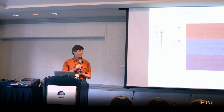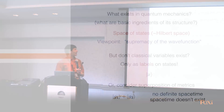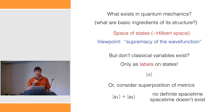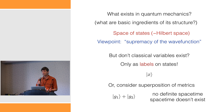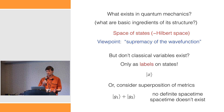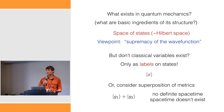Let's start with what exists in quantum mechanics. What are the basic ingredients of the structure of quantum mechanics? Well, certainly a space of states, something like a Hilbert space. Here I'm taking the viewpoint that the wave function is what exists — that's the sort of supreme thing. And if we think about the familiar concepts from the classical world, classical variables — don't they exist? Well, not really. They only exist as labels on states, in a sense.